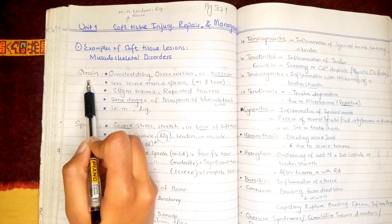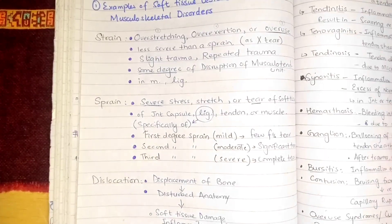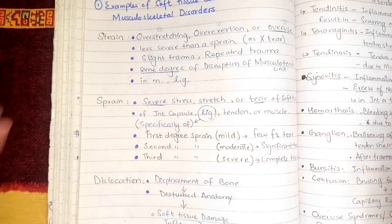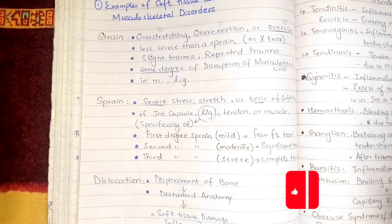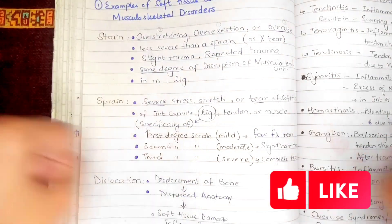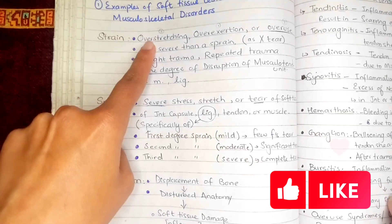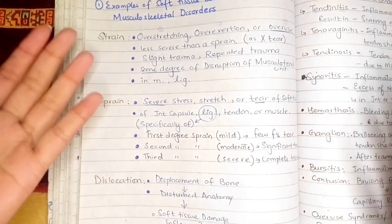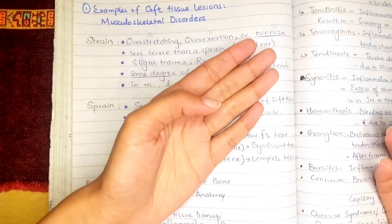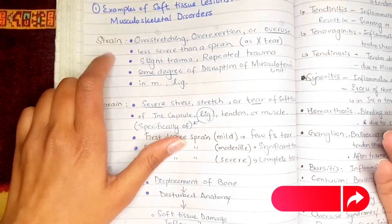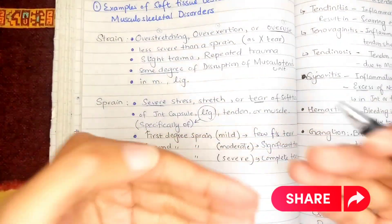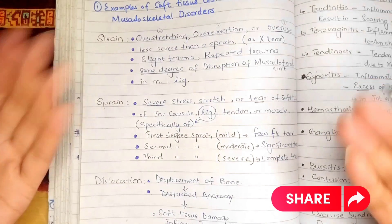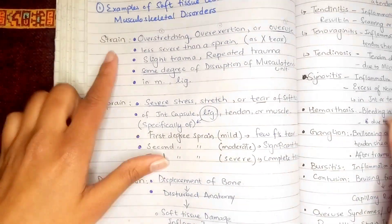The first definition is of strain. A strain basically occurs when we overexert some soft tissue. Overexertion means we are applying a large amount of force on that soft tissue, and this results in overstretching. This overstretching is referred to as overuse of the soft tissue, and this overuse is basically the strain.